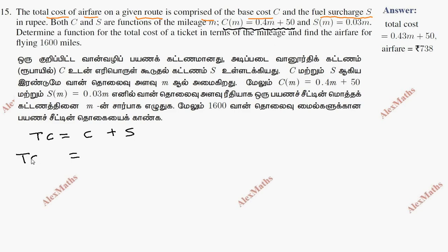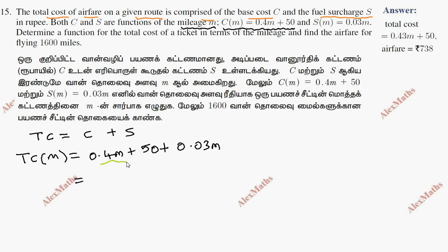So total cost is going to be a function of mileage. T(M) = 0.4M plus 50 plus S, where S is going to be 0.03M. Now combining these two like terms — both have M — we get 0.43M plus 50. This is the total cost in terms of mileage.